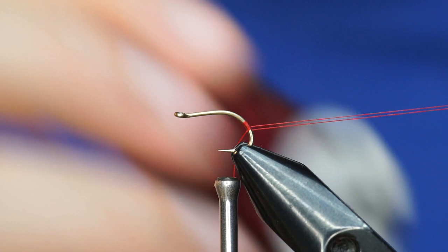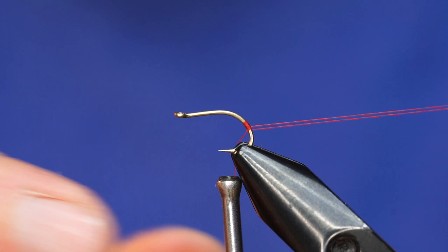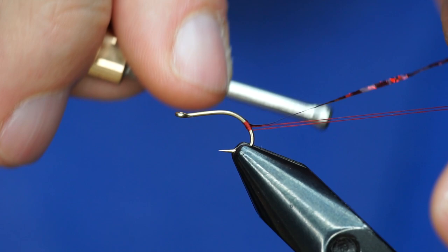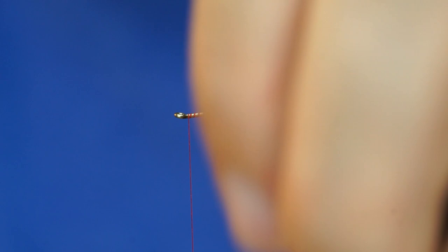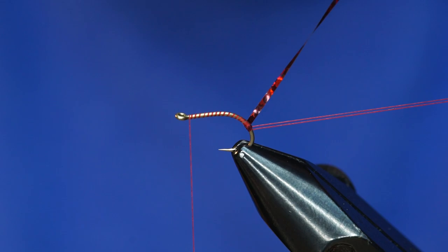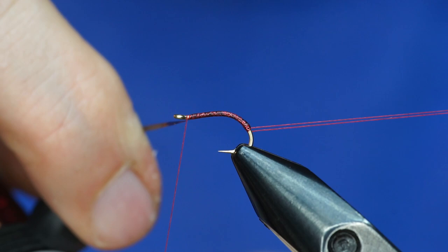I'll grab my holographic tinsel from Beavis. This is a medium-sized cranberry color, and this will serve as the body. We'll secure that in there and work my way up to the eye of the hook. We'll create our body with the tinsel just by wrapping this tightly and smoothly up. Once I get to the head, tie that off.